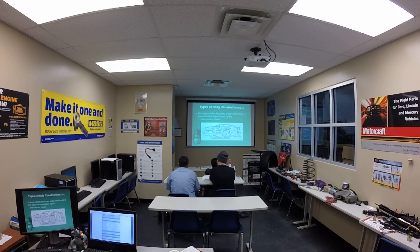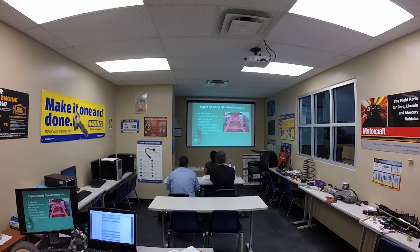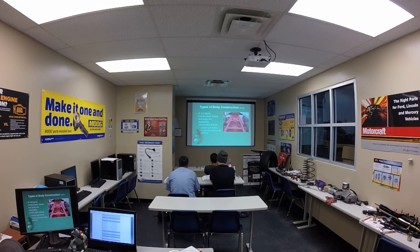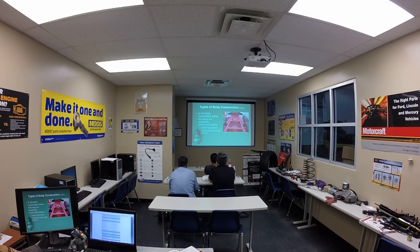Types of body constructions: Unibody construction uses body sheet metal to give structural support and rigidity and is the most common chassis. The unibody construction has the ability to build crumple zones into the structure. In full frame construction, the frame and body are separately constructed pieces. They have a ladder-type frame, which is usually found in trucks and heavy-duty vehicles. That trainer right there, the 05 Ford Explorer, is a full frame construction. Most trucks and large SUVs are full frame.